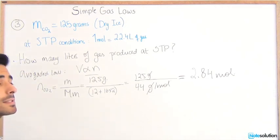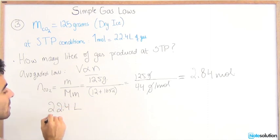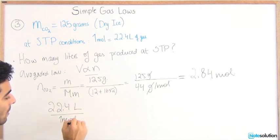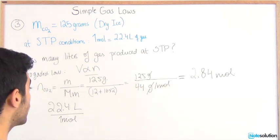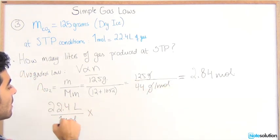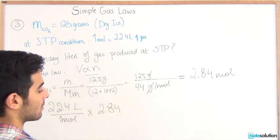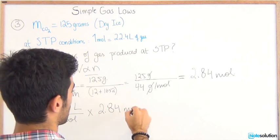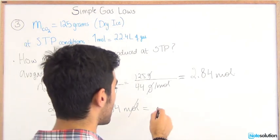We know that in one mole there's 22.4 liters of a gas. In order to find how many 2.84 moles have, we simply multiply this relationship by the amount of moles that we have. Cancel off the units.